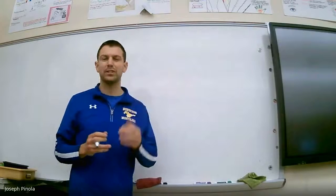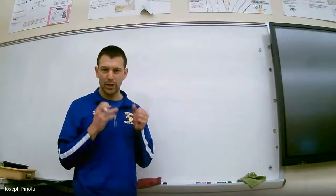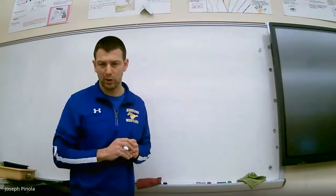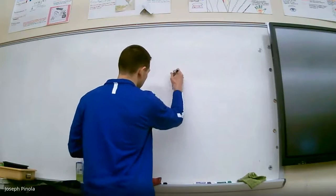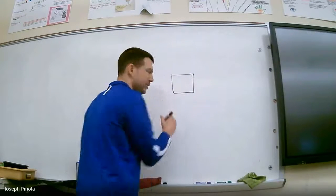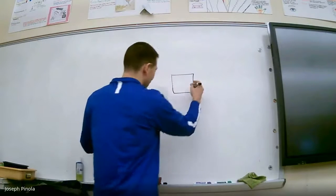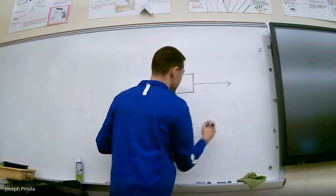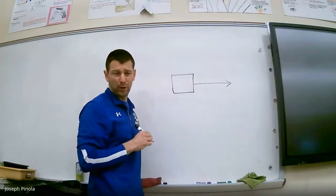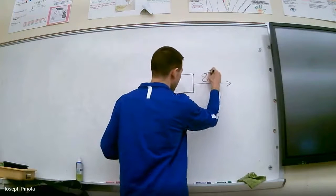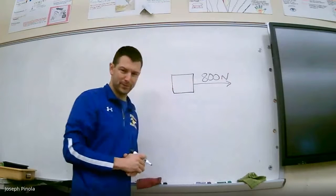Let's make a force diagram of what was happening when I pulled with a stronger amount of force on the fridge. Here's our refrigerator, represented by a simple box. I pulled on the fridge with more force this time—about 800 newtons.